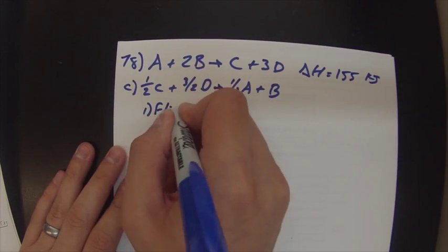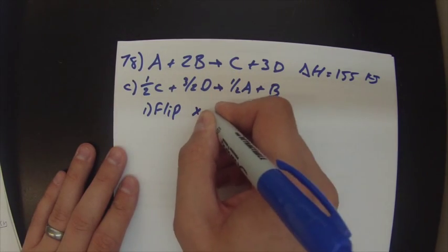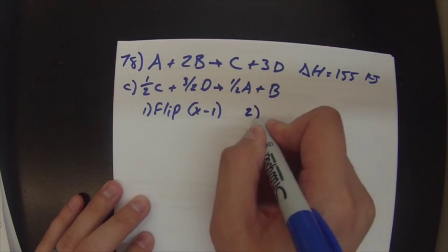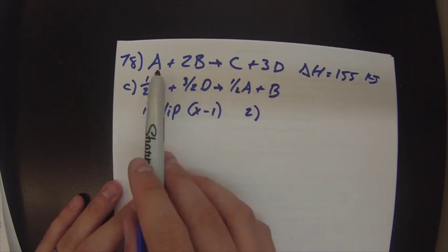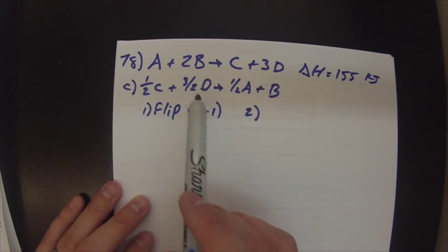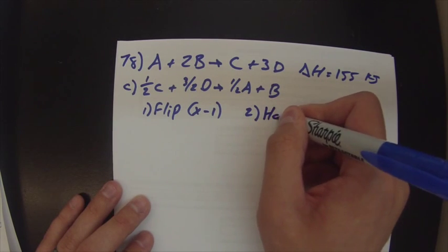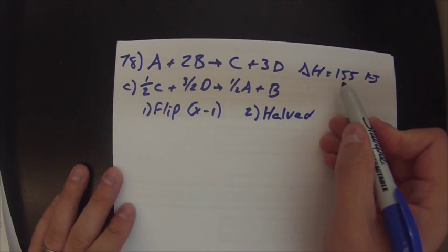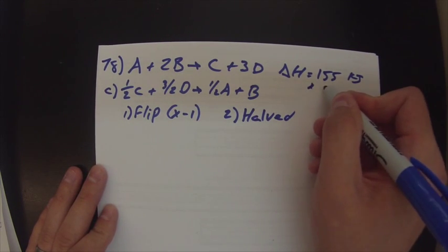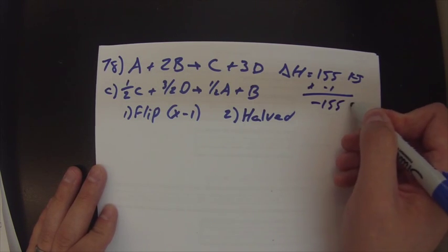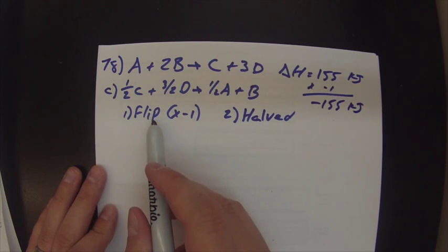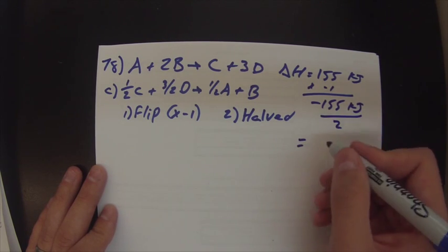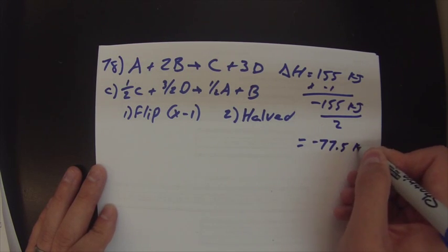Somebody flipped it, which means remember you just multiply by negative one your value of H, so we're going to have to do that. And then the other thing that was done to it, everything is half. So you had one A you now have half an A, you had two B you have one, right? Three you have three halves, so it was halved. So that means we need to have our delta H. So all we do is our 155 positive, we're going to multiply that by negative one and get negative 155 kilojoules for the flipping of it. And then we have it, so now just divide this by two and we get our answer of negative 77.5 kilojoules.